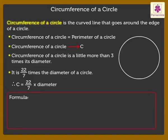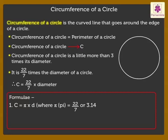Here are the formulae that are used to find the circumference of a circle. 1. Circumference of a circle is equal to pi into d where pi is equal to 22 upon 7 or 3.14 and d is the diameter.